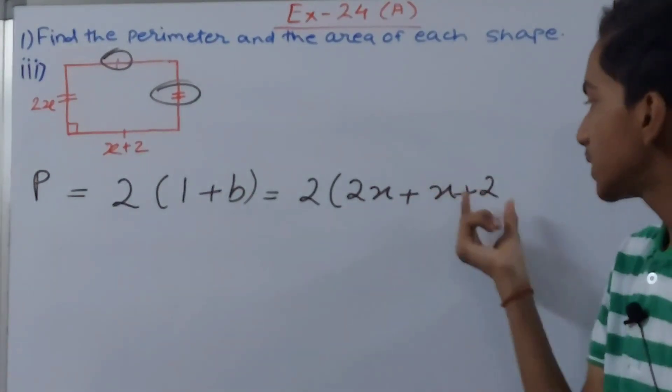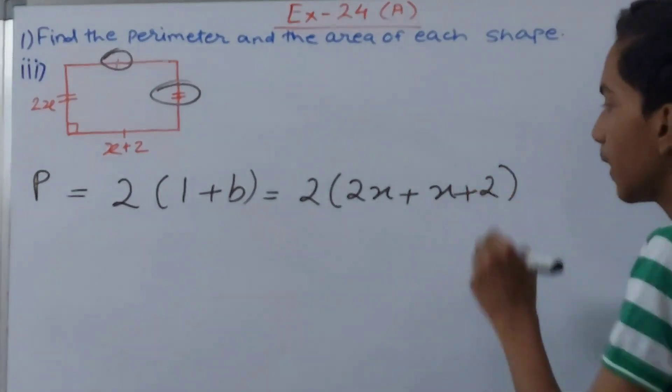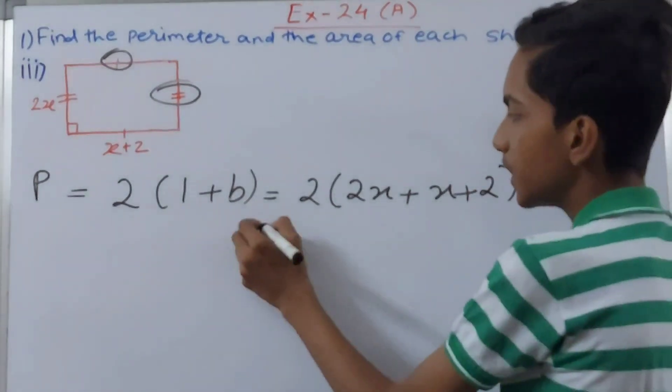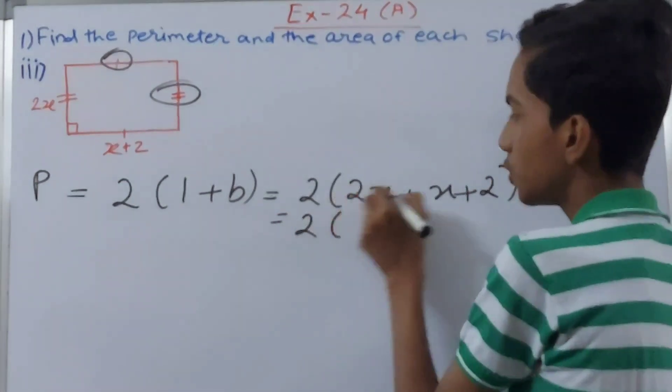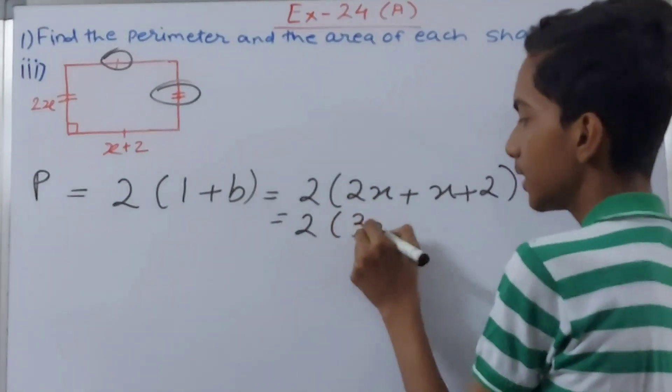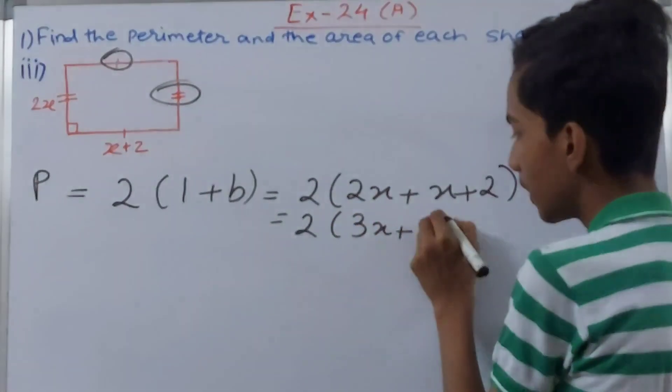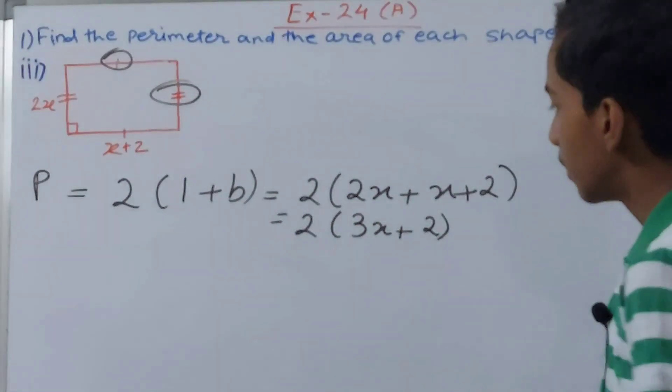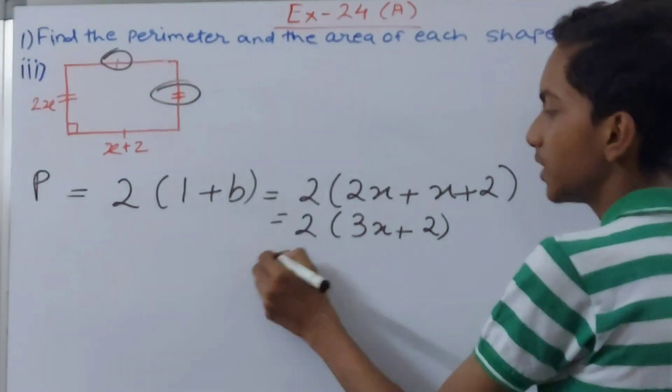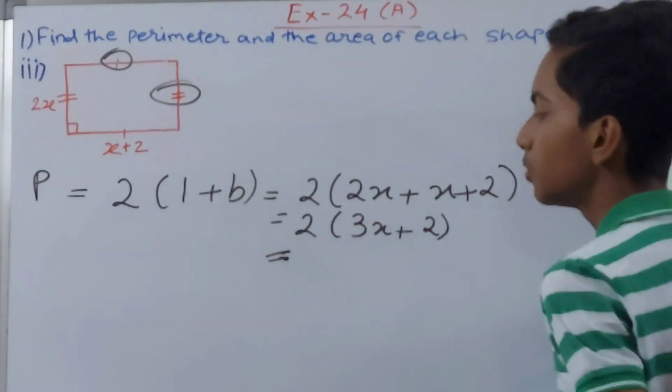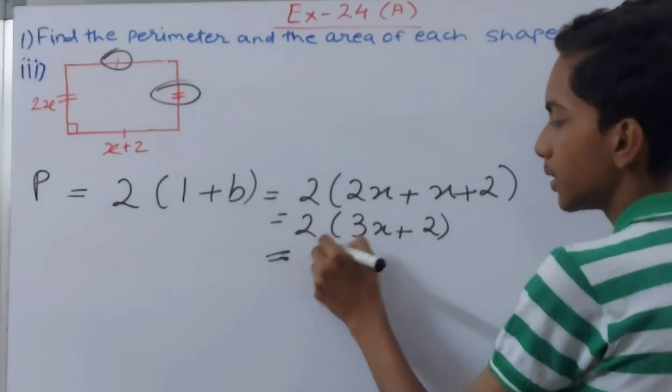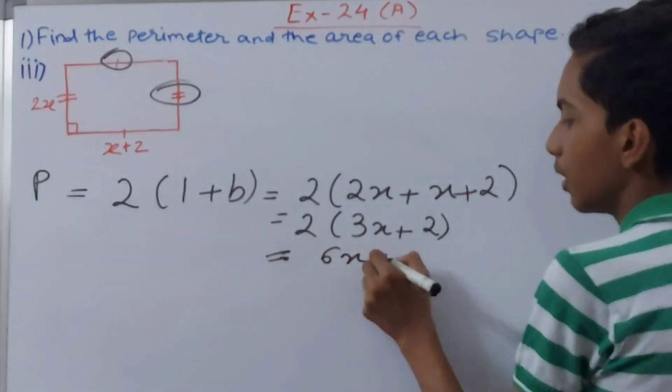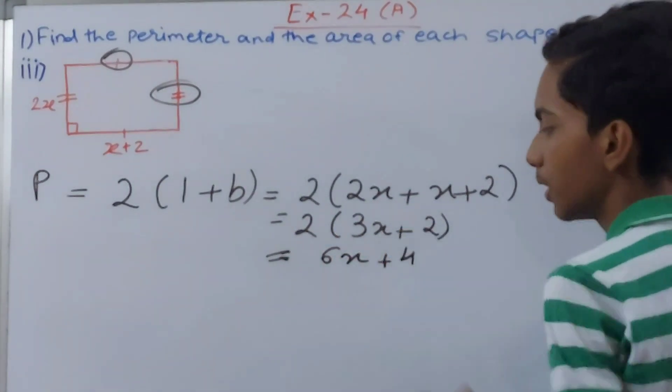Now what will this give us? Let's see, 2x plus x becomes 3x plus 2. This is what it will be. Now open the brackets and simply multiply. So 2 times 3x becomes 6x, plus 2 times 2 becomes 4, and that is the perimeter.